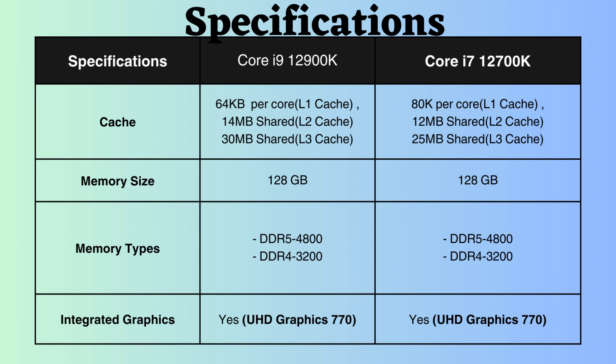Both of these processors support up to 128 GB of RAM. Both processors support DDR4 and DDR5, with RAM frequencies of 3,200 MHz for DDR4 and 4,800 MHz for DDR5.